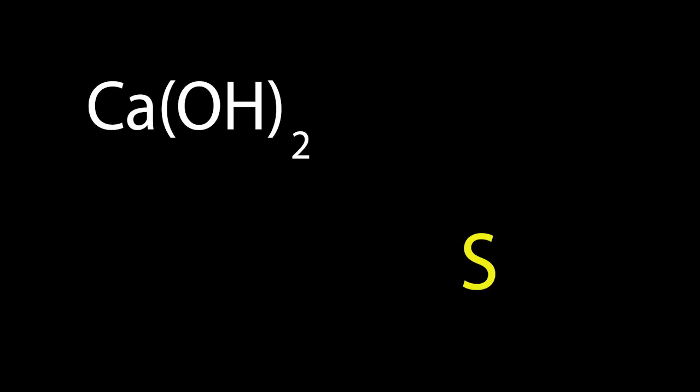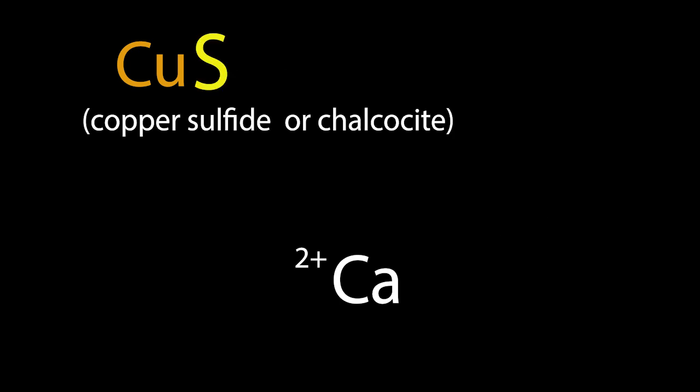During the reaction, calcium bonds with sulfur creating calcium sulfide. As calcium and sulfide ions dissociate in water, they separate into positive calcium and negative sulfur ions. Some of these sulfur ions bind to the positive copper ions yielding black copper sulfide.